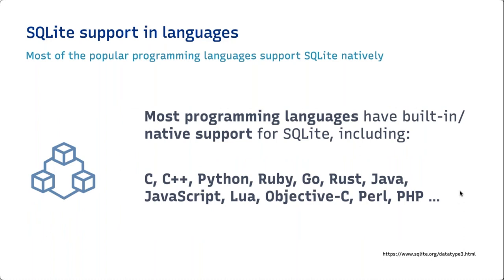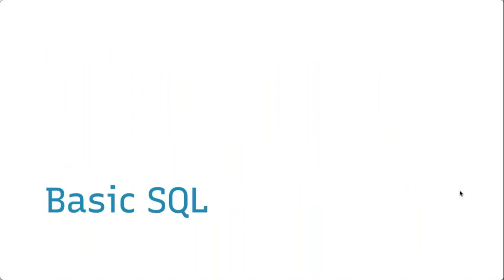SQLite has broad support across almost all programming languages, so you can easily transfer a project to any other software. For example, a database system built in Python using SQLite as a backend can be rewritten in Rust with no changes to the database itself. Most programming languages have built-in native support for SQLite, meaning you don't need to install large third-party libraries. Python and PHP, for example, have native standard library support for SQLite.